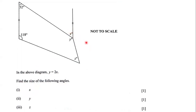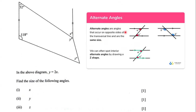In order to do this, we will use this chart. The chart tells us that alternate angles are angles that occur on opposite sides of the transversal line and are the same size. We can often spot interior alternate angles by drawing a Z shape, and so we can identify alternate angles by a Z shape. Here we have a Z shape, and this angle and this angle are equal — they are alternate angles.